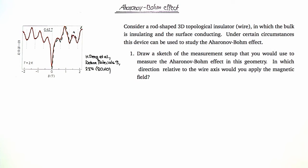In the first part of the exercise we are going to sketch the measurement setup that can be used to measure the Aharonov-Bohm effect in the structure. The Aharonov-Bohm effect is an interference effect that can be observed in nanostructures where the phase coherence length is larger than the system size.